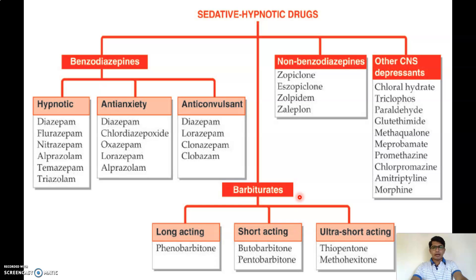Barbiturates are classified into long-acting, short-acting, and ultra-short-acting. Phenobarbitone is the example for long-acting barbiturates. Butobarbitone and Pentobarbitone are short-acting, and Thiopentone and Methohexitone are examples of ultra-short-acting barbiturates.